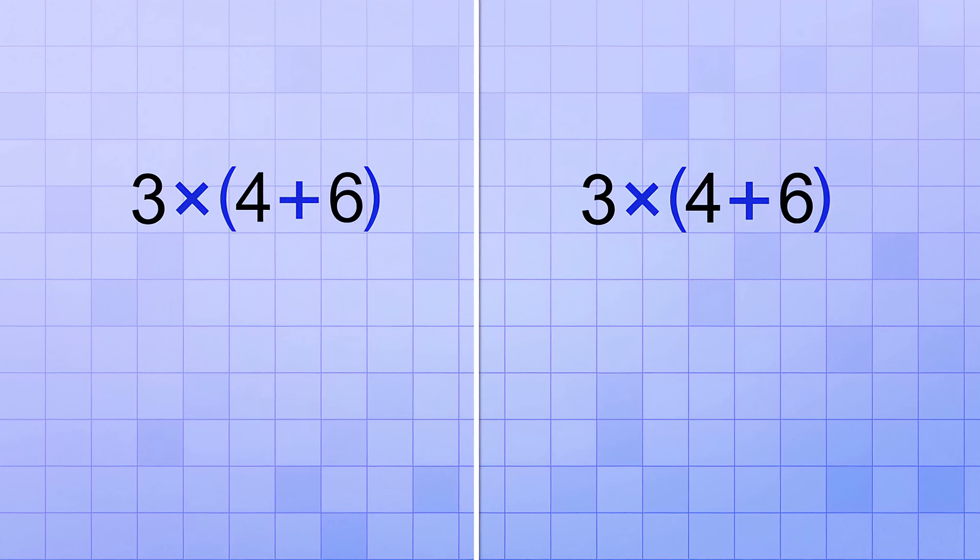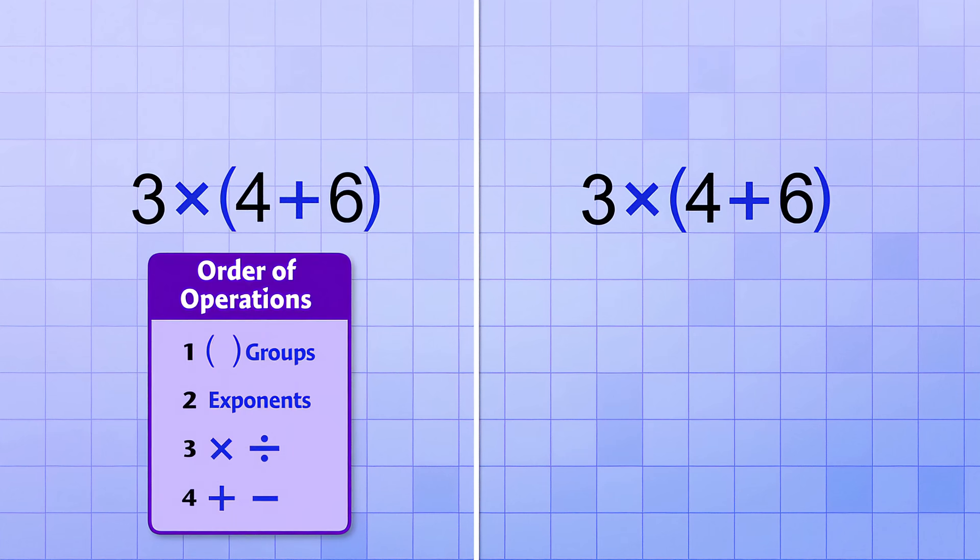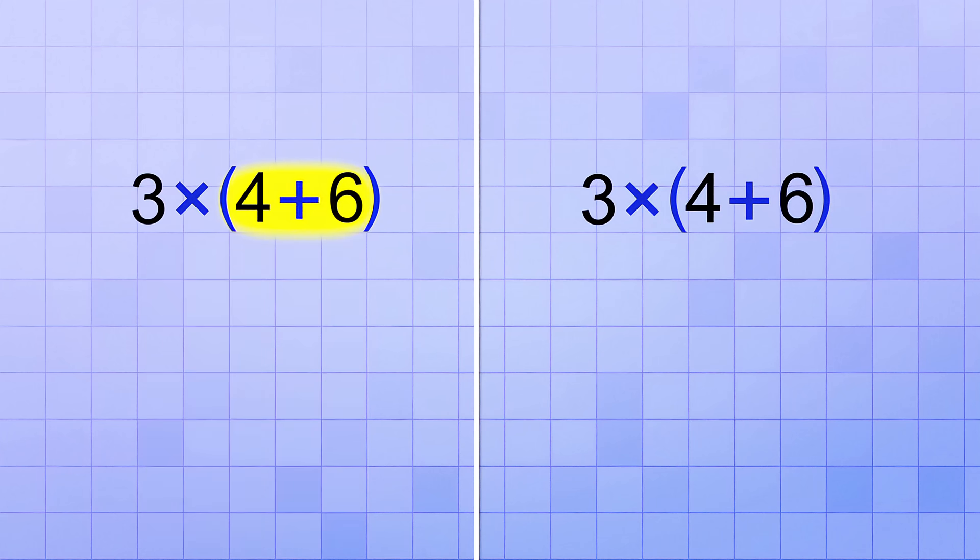So for the first way, our order of operations rules tell us that we need to do any operations inside of groups first. And since these parentheses form a group, we first need to add the 4 and 6, which gives us 10. Next, we can multiply that by 3, which gives us a final answer of 30.